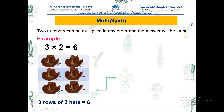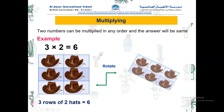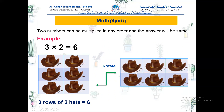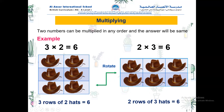Now let's rotate. Here we have two rows of three hats. And the total is two, four, six — the same. The multiplication sentence: we will rotate and swap the numbers, so here we have two multiplied by three equals six. It doesn't matter if you swap the numbers around in multiplication — the answer will be the same whether we say two multiplied by three or three multiplied by two. The answer in both cases is six.